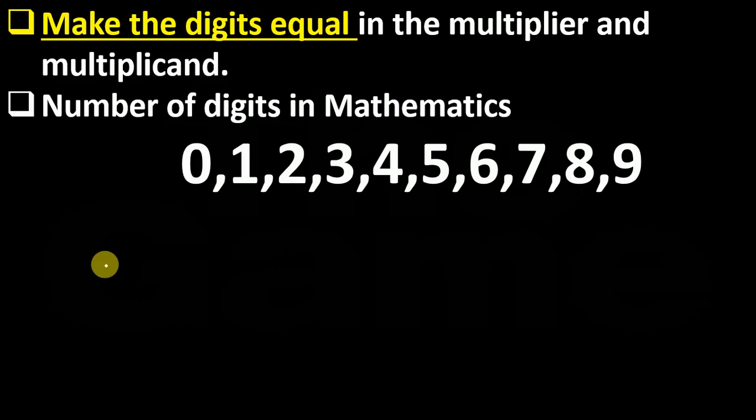For learning this Sutra, the first thing which we have to remember is we have to make digits equal. We will understand the meaning of this with the help of an example. In Mathematics, how many digits are there? There are in total 10 digits,